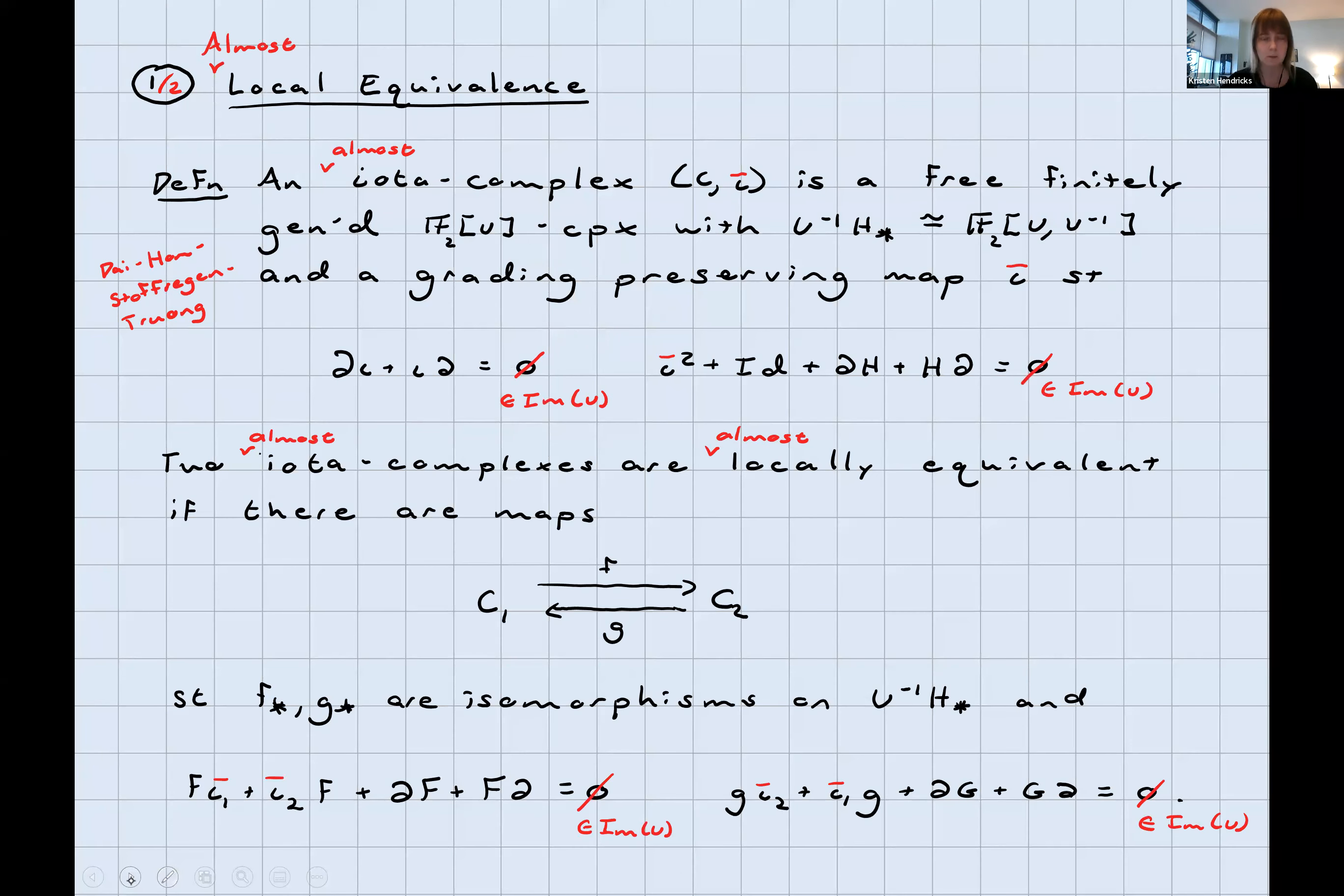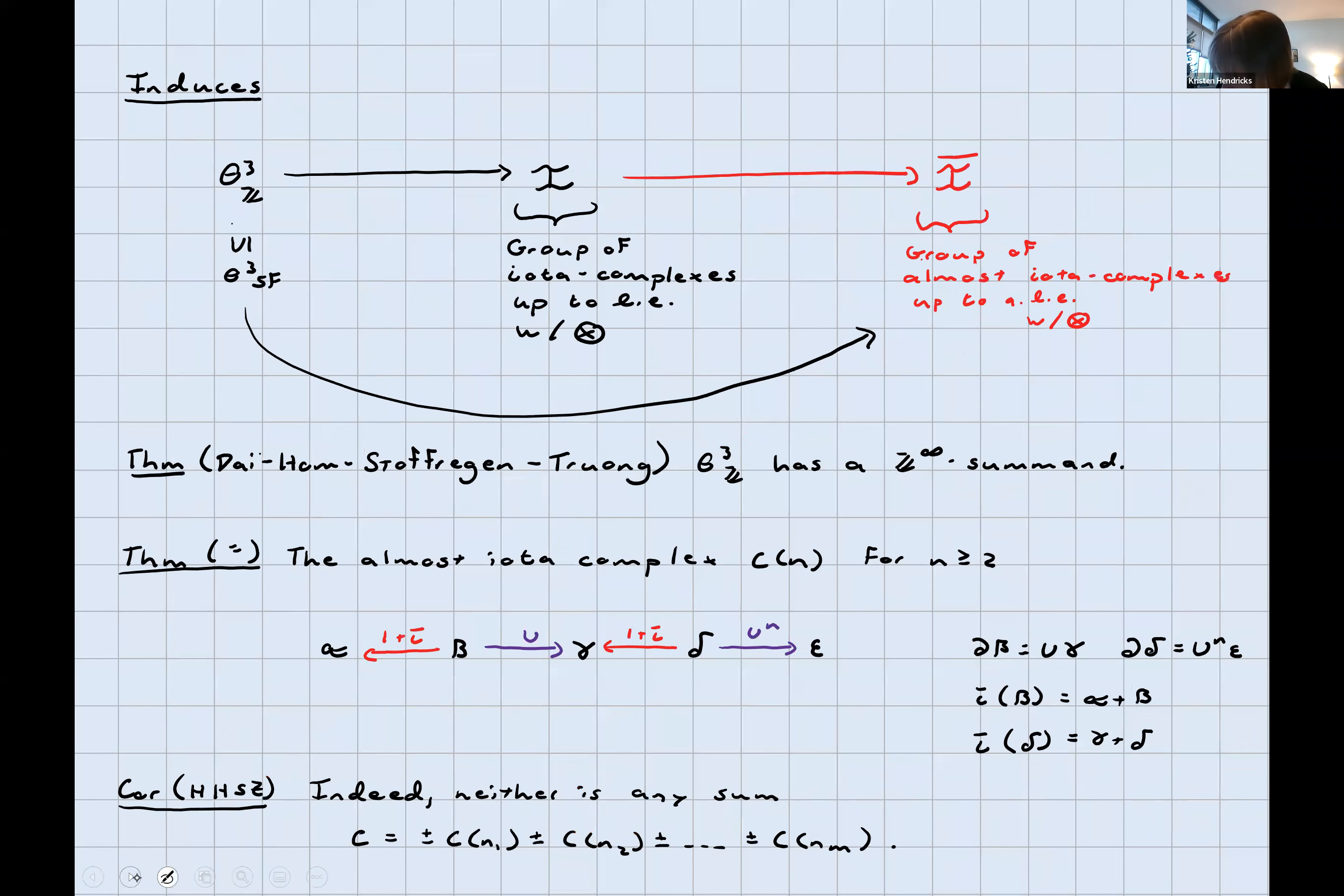But that's okay, somebody else had a great idea. It turns out that if you weaken this relationship even more to something called almost local equivalence, things get much simpler. Here the word almost means modulo U throughout. This is all the same definitions, except instead of having a chain map such that del iota plus iota del is actually zero, I just want it to be something that's in the image of the variable U, and similarly throughout for all the other relations. Notice that doesn't actually have to be a chain map anymore. But it turns out that if you weaken this such that everything's in the image of U, this idea is due to Dai, Hom, Stoffregen, and Truong, you get a further map from the homology cobordism group to now we're mapping to the group of almost iota complexes up to almost local equivalence. The group operation is still the tensor product operation. And that group, it turns out, is a lot more straightforward.